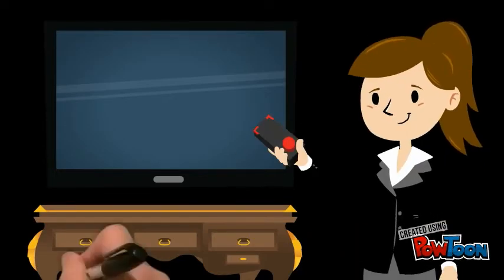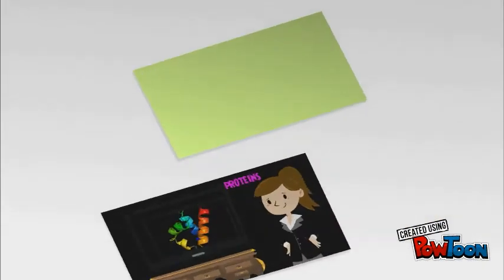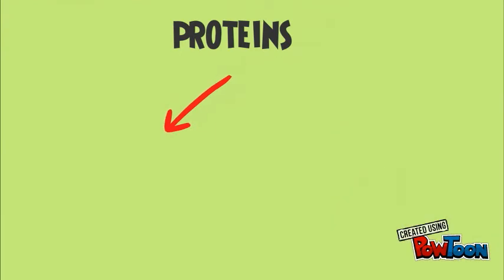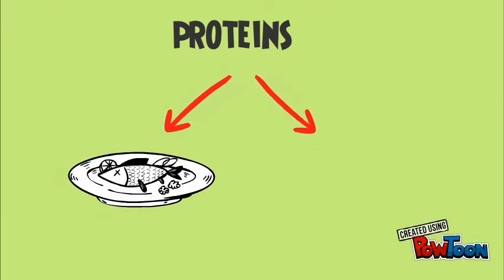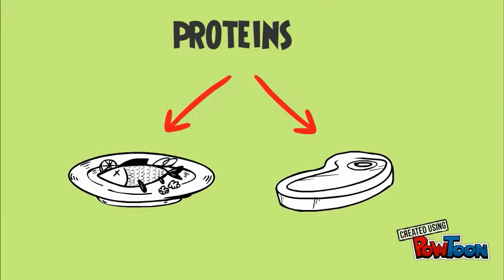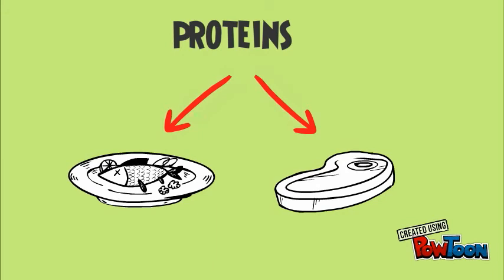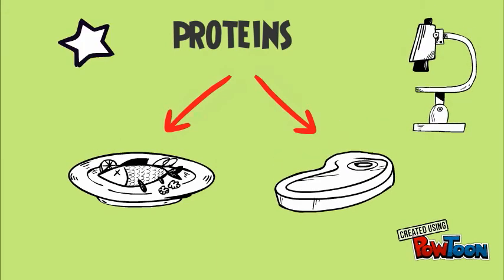Let's continue with proteins. Proteins are long chains of amino acids linked together by peptide bonds. They are the most complex and abundant biological macromolecules in cells.